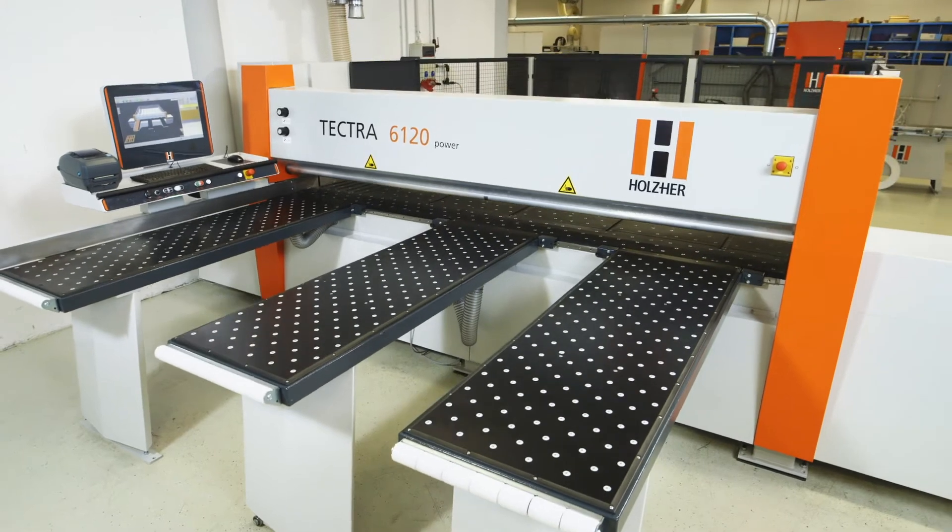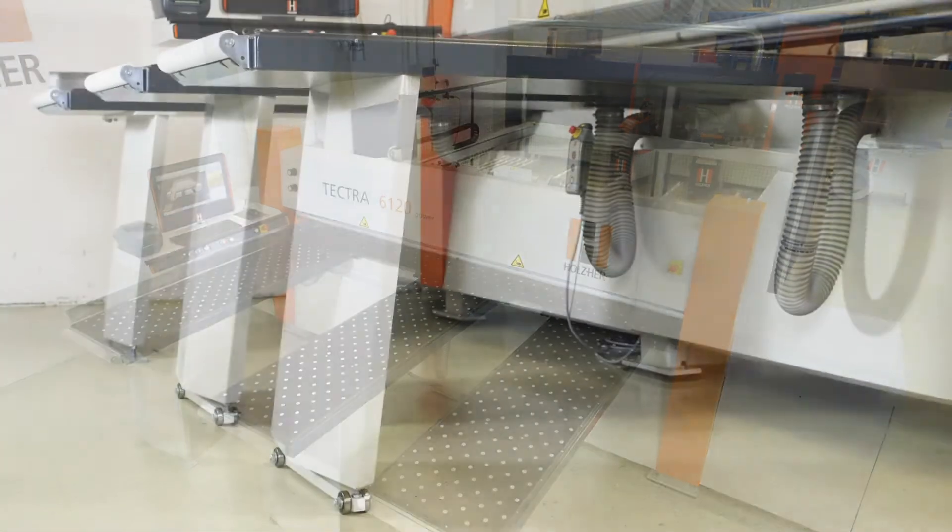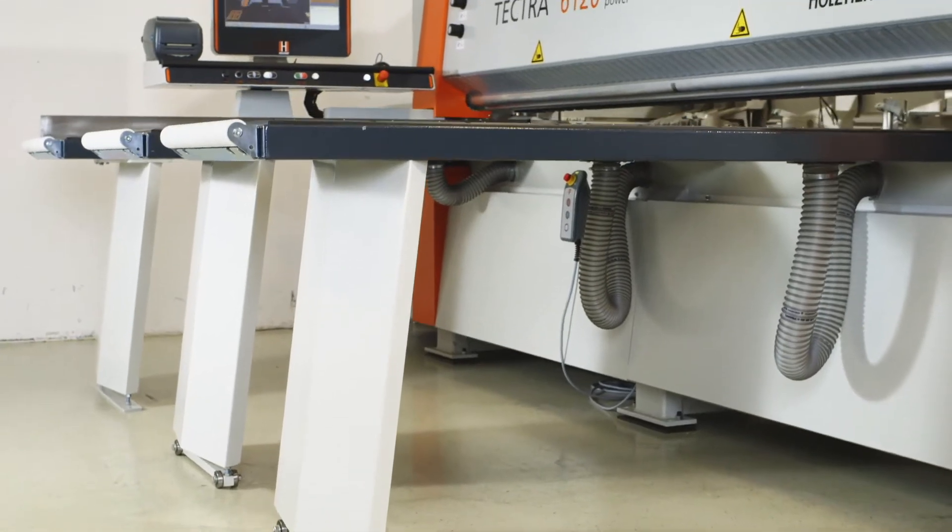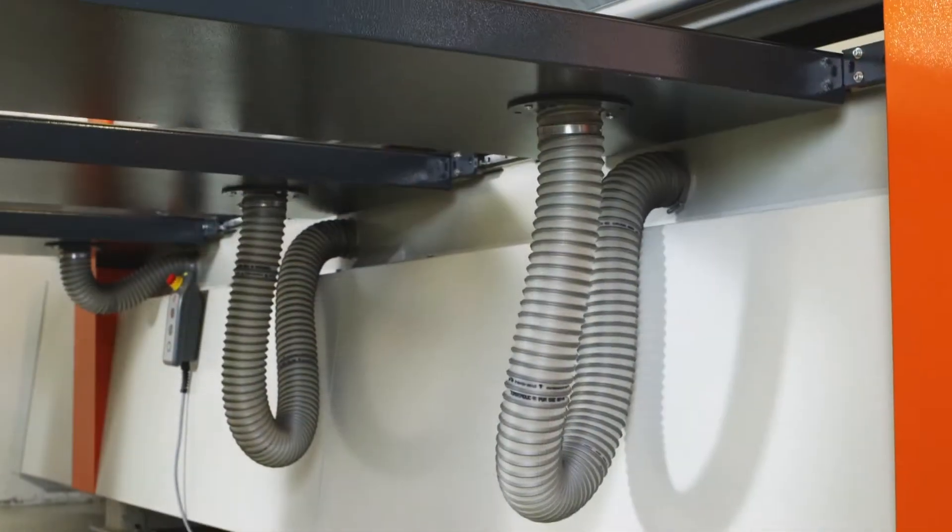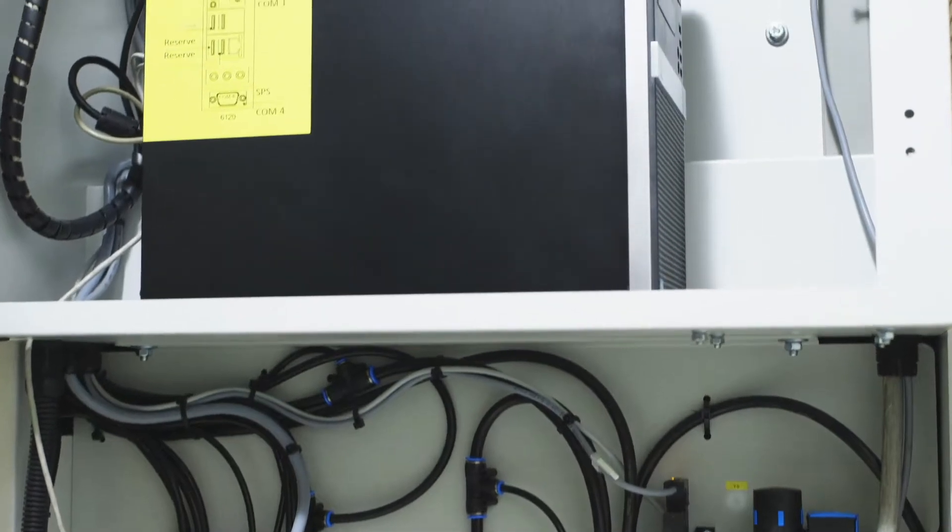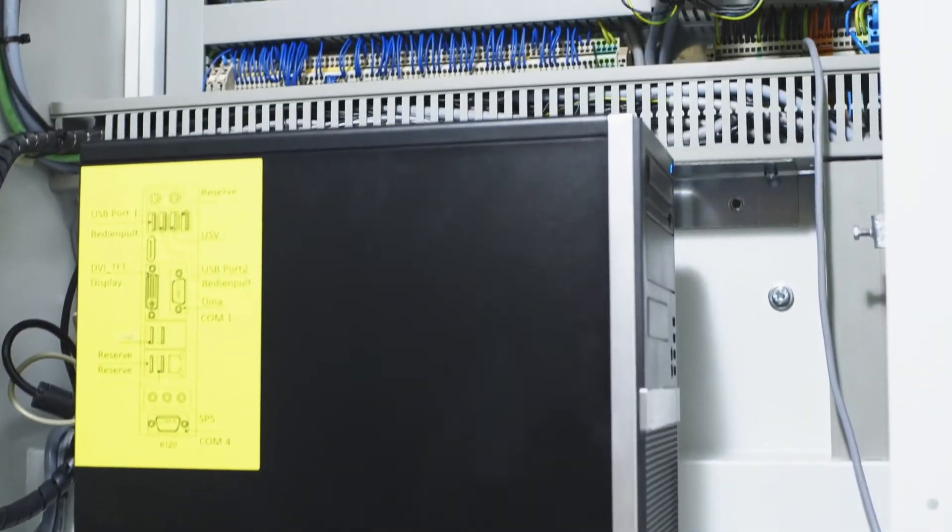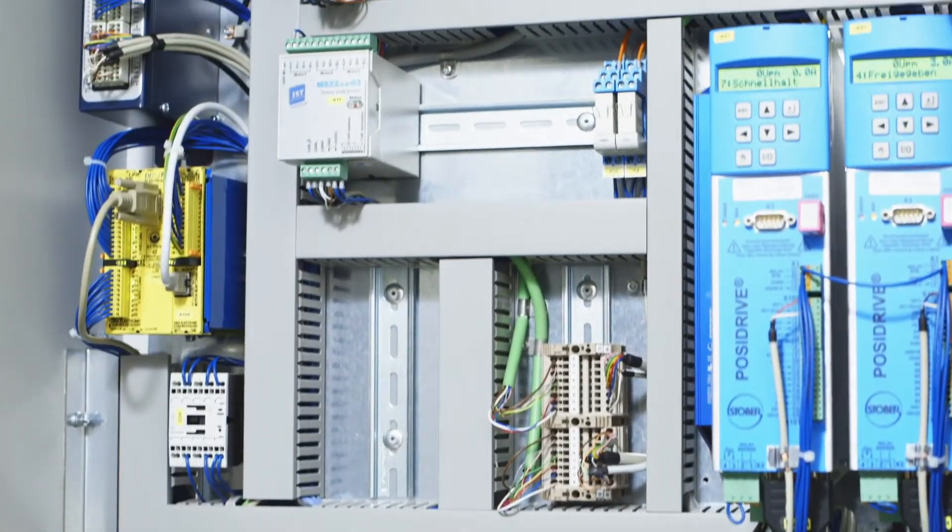The Tektra 6120 beam saw from Holzhair sets new standards in sawing technology with its high-powered dynamic processes. Its solid design and use of state-of-the-art control and drive equipment from CNC technology provides the basis for high-precision panel cutting with optimum cutting times.